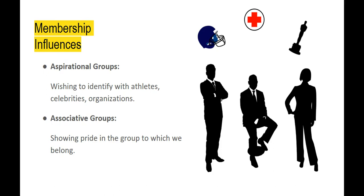But sometimes we're influenced by people we don't even know. One type is aspirational groups — we've talked about buying products that help us indicate membership in an aspirational group. One of those influences is when the aspirational group turns around and indicates that we ought to buy something. That's what happens with celebrity endorsements, but also with branded merchandise from sports teams that we support. The aspirational group either provides or endorses the merchandise, and we feel that we need to buy those products to show that we aspire to be like those particular people.